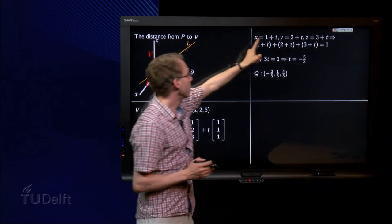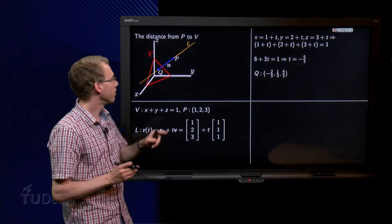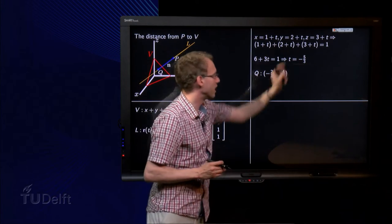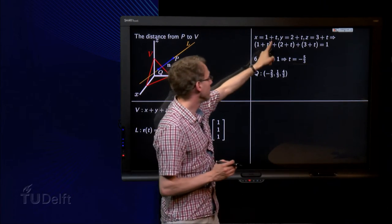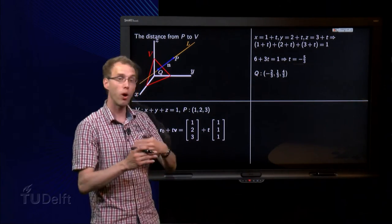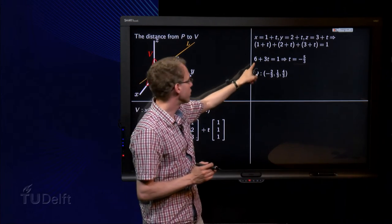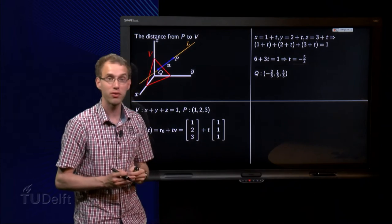But we also know that it has to be in the plane, so the X, Y and Z also have to satisfy the equation of the plane. So if we substitute X, Y and Z in the plane, we get X plus Y plus Z equals 1. So 1 plus T plus 2 plus T plus 3 plus T equals 1. Or if we work it out, we have 6 plus 3T equals 1, or T equals minus 5 over 3.